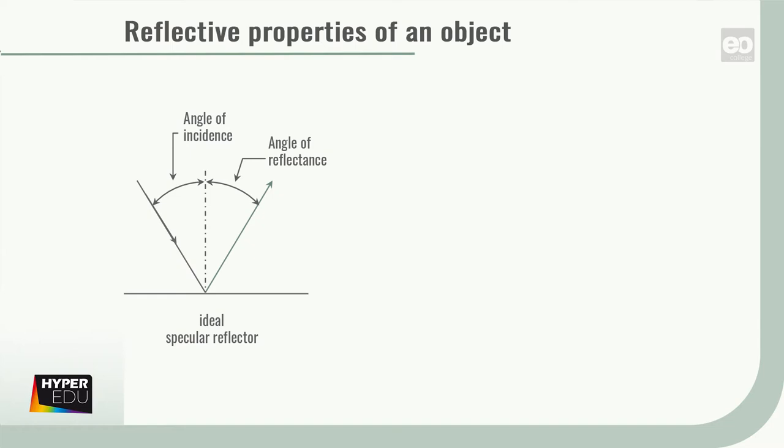Smooth surfaces usually cause specular reflection, while rough surfaces cause diffuse reflection. Whether a surface is perceived as rough or smooth depends on the wavelength.